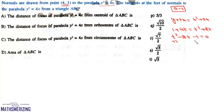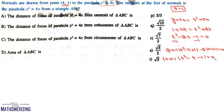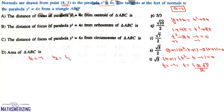We can factor t³ - 2t - 1 = 0 as (t + 1)(t² - t - 1) = 0. So the values of t are t1 = -1, t2 = (1 + √5)/2, and t3 = (1 - √5)/2. Now the point of intersection of tangents at parameters ti and tj on the parabola is (ti·tj, ti + tj). So we write the three vertices of triangle ABC using these intersection points.